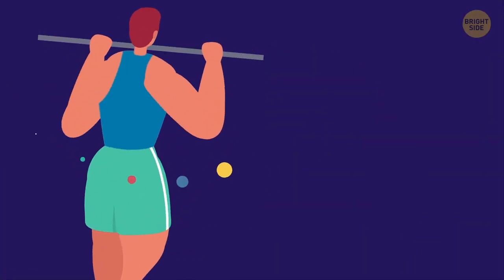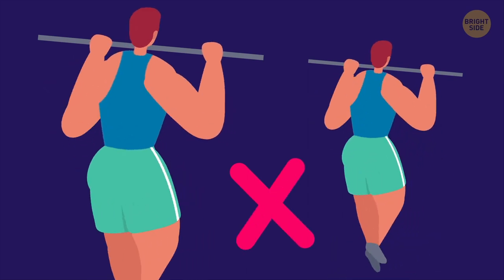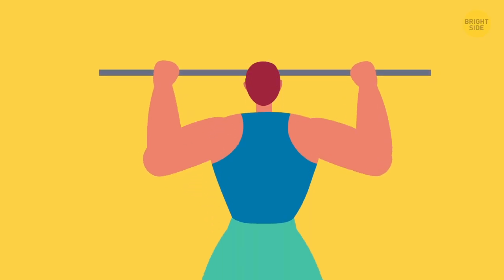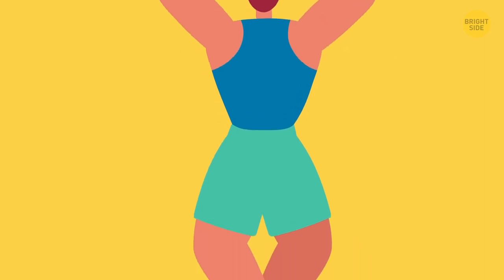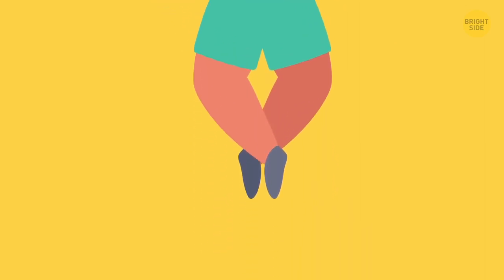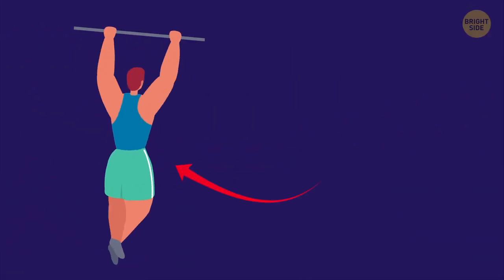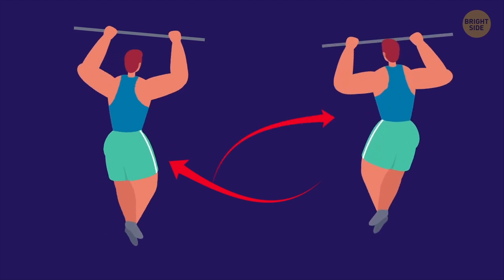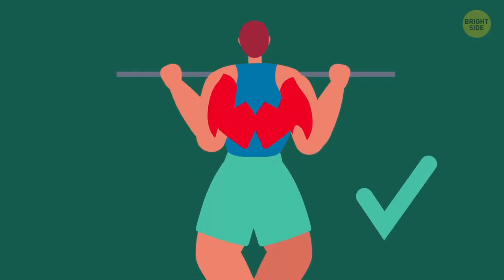The worst thing to do during pull-ups are swinging your body to try and gain momentum, letting your body flail around by not bracing your legs and core, and limiting your range of motion. It happens when you don't pull yourself high enough and don't dip your body low enough. These mistakes make all your effort ineffective.